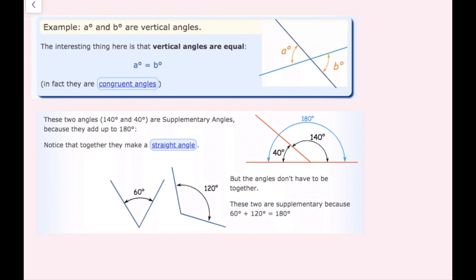Just some quick review. Vertical angles are angles that are created when we have intersecting lines. The angles that are basically across from each other — so in this case A and B — these are vertical angles, and vertical angles have the same number of degrees, meaning they are congruent. This angle where my cursor is and this one right here are also vertical angles.